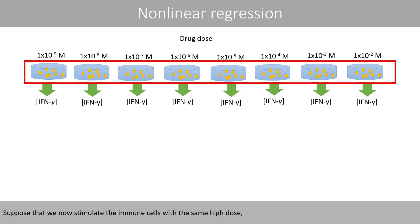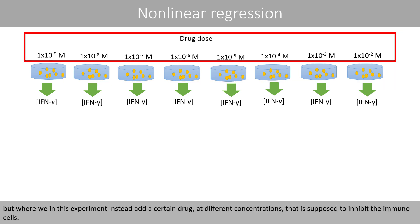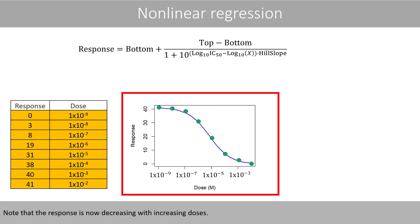Suppose that we now stimulate the immune cells with the same antigen dose in the different cultures, but where we in this experiment instead add a certain drug at different concentrations that is supposed to inhibit the immune cells. Note that the response is now decreasing with increasing doses.